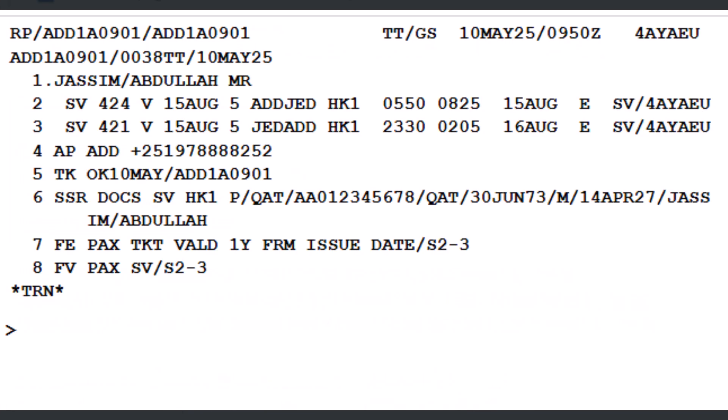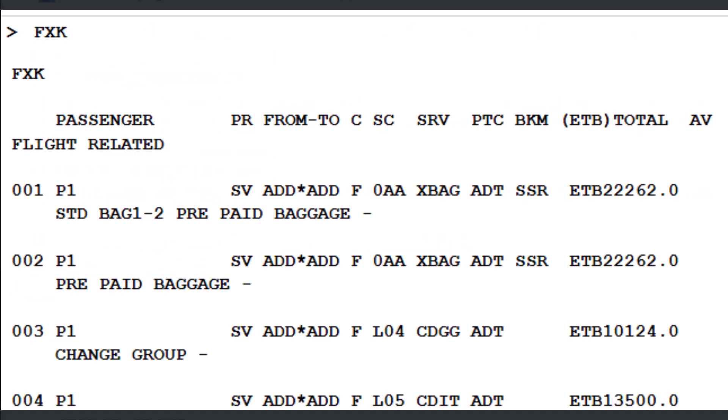To display a catalog of ancillary services for the full itinerary, enter the command FXK, then press Enter. This command shows available ancillary services for all passengers in the PNR and for every segment of the itinerary.